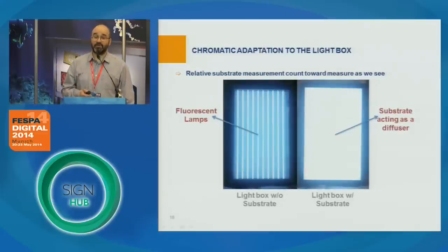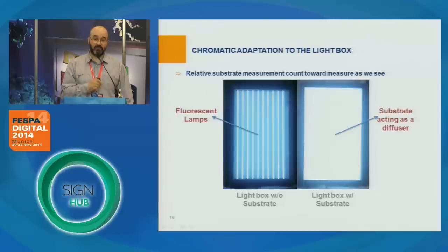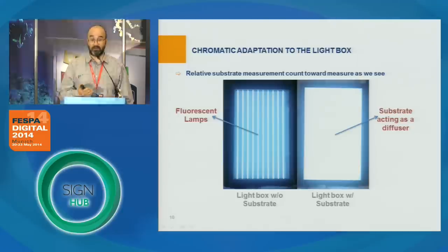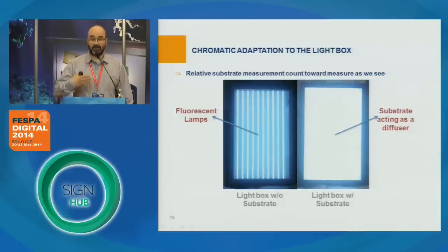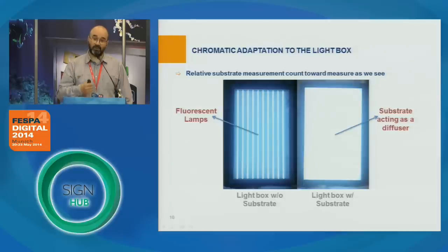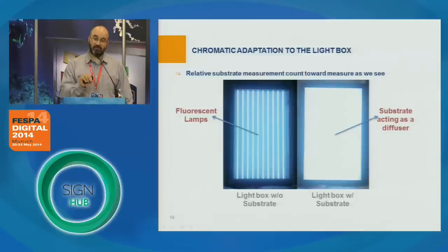Chromatic adaptation is very important for backlit applications — this is the reason we measure in so-called relative mode. When you look at the backlit illuminant, we can see the lamps. But as soon as we put an unprinted substrate on top, it acts like a scattering surface, and your eye adapts to the viewing condition. We perceive both the light and the substrate as the white point of the viewing environment. That's why we measure in relative mode.